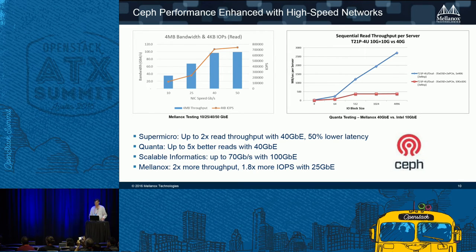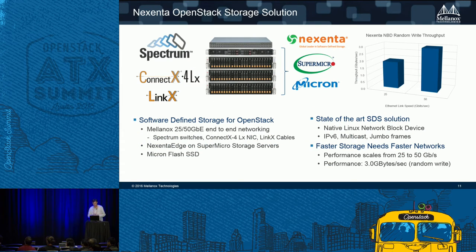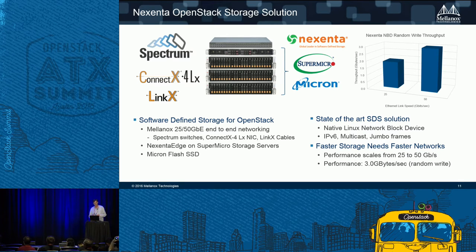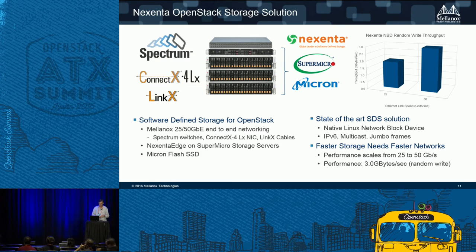These are all Ceph-related workloads we've done. The next one is Nexenta — we just did this work last week, taking the new Nexenta Edge and running it on Supermicro servers with Micron flash drives. Running at just 25 and 50 gigabits, we got about 3 gigabytes per second performance. Frankly, this was pretty much out of the box with no performance tuning yet. We need to add another gateway device and I think we'll push these numbers even higher. We just published a blog on this today, so I encourage you to go to our website and look at that.